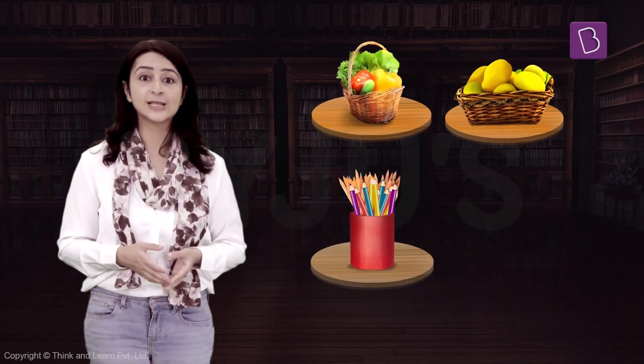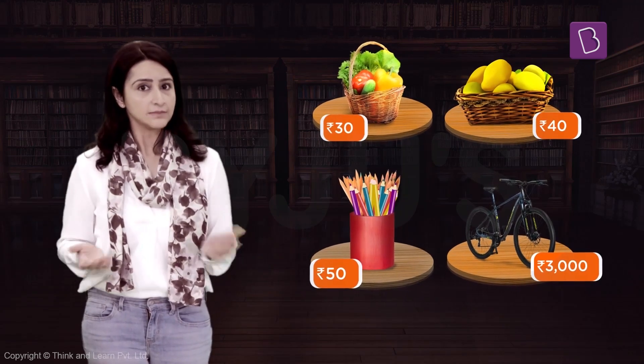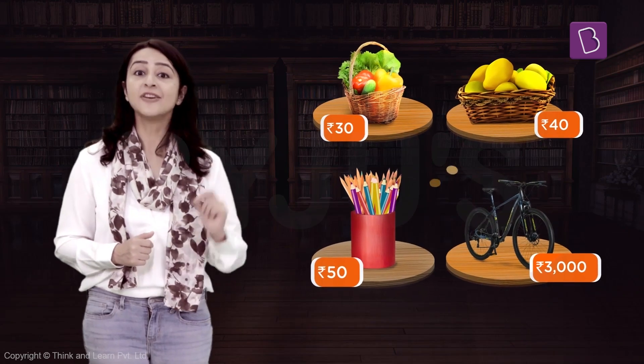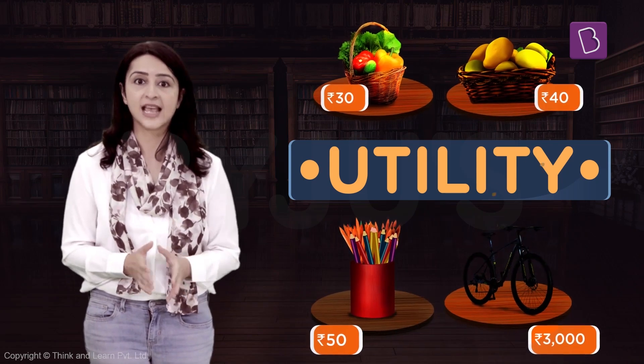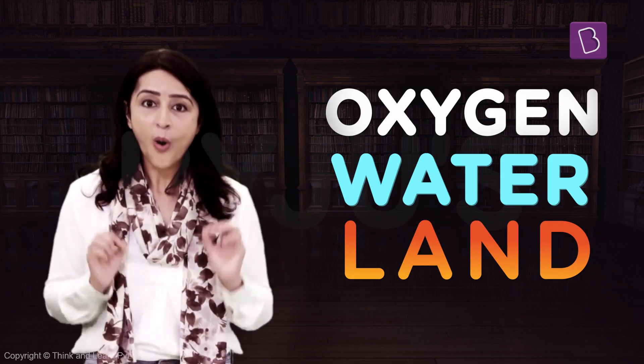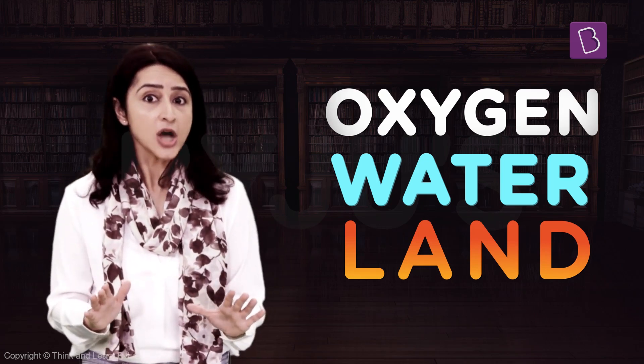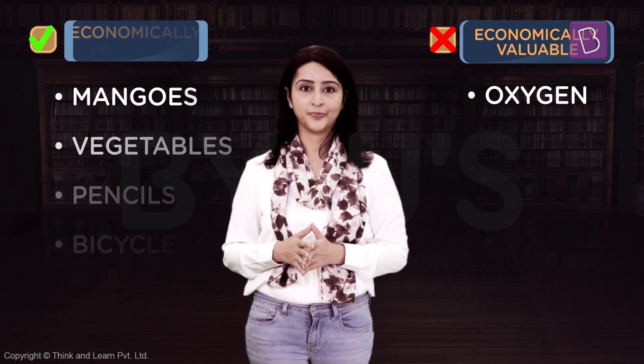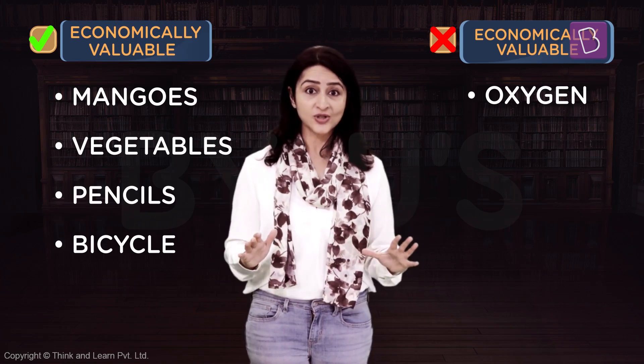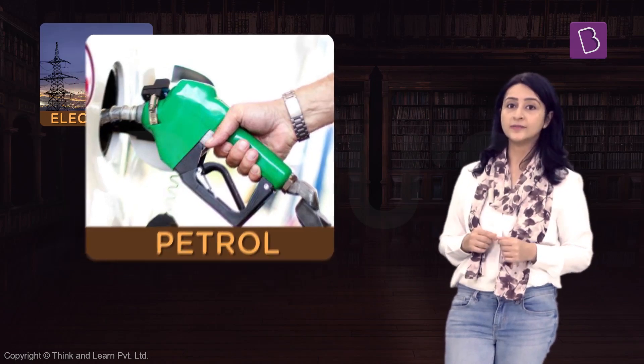We buy goods such as mangoes, vegetables, pencils, and bicycles by paying money. We buy them because they have a utility, and this utility makes them economically valuable. But there are things we don't pay money for — the oxygen we breathe, the water we drink, the land on which we stand. These all have value, but we don't pay money for oxygen. So some resources do not have an economic value, while others do, but all resources have a value.